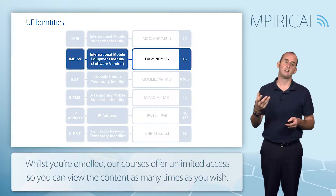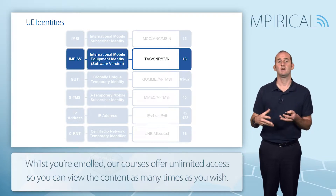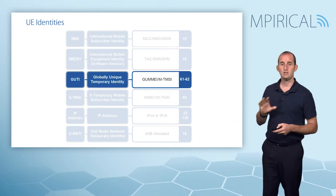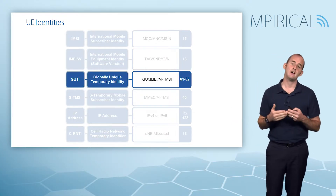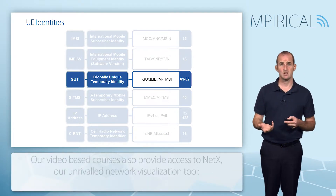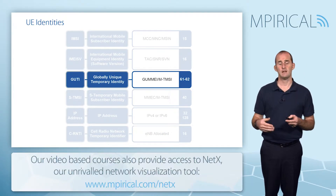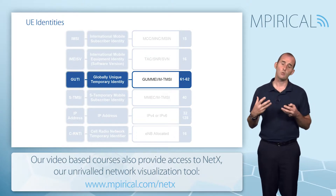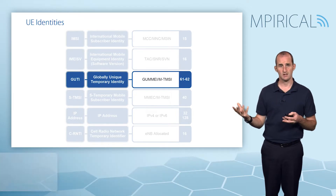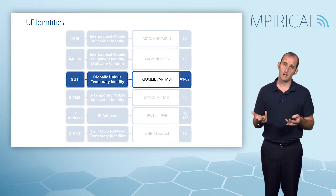So we're also finding out what version of perhaps iOS or Android that the device is running. Now in 2G and 3G we have temporary identifiers, like the TMSI or the packet TMSI — it's exactly the same in LTE. We do not want to constantly use the IMSI across the air interface because sometimes our air interface is not encrypted.